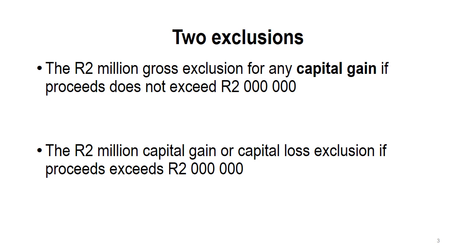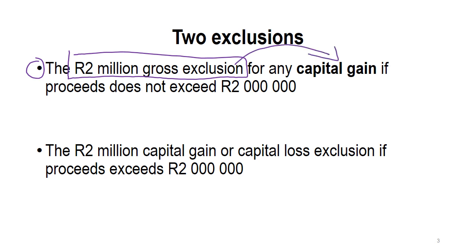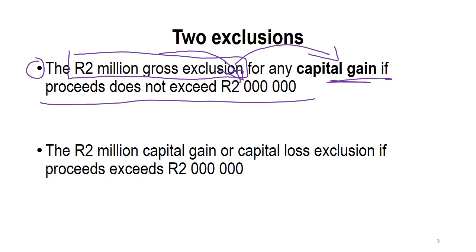The first exclusion is the two million rand gross exclusion. This says we will exclude any capital gain — only a capital gain — if your proceeds do not exceed two million rand. That's what the gross refers to: it essentially looks at your proceeds. If your proceeds for the sale of your primary residence are less than two million rand and you have a capital gain, then we will disregard that capital gain in its entirety.